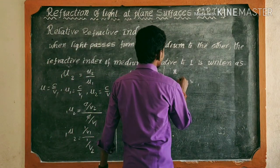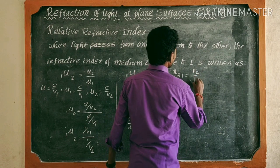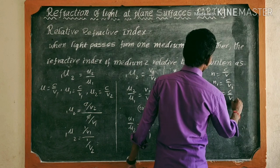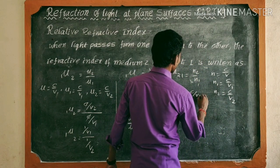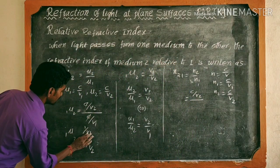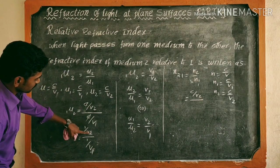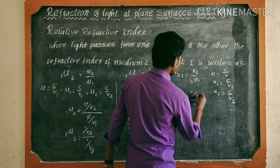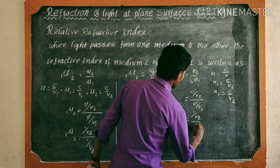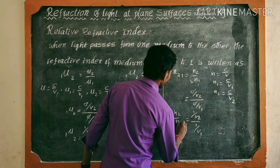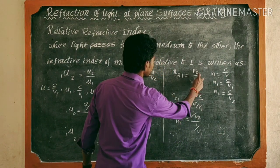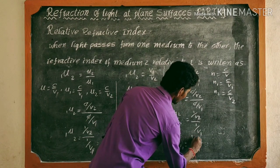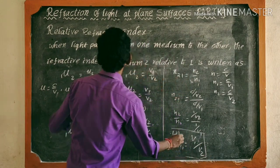So in summary, n₂₁ = n₂/n₁. What is n? n = c/v, so n₁ = c/v₁ and n₂ = c/v₂. Substituting, n₂/n₁ = (c/v₂)/(c/v₁) = v₁/v₂. So n₂₁ = v₁/v₂. This is the relative refractive index.